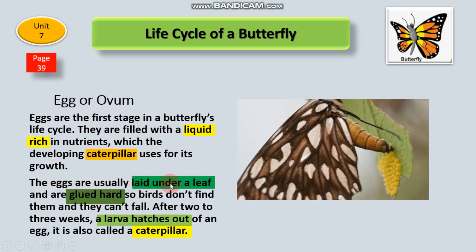Eggs are usually laid under a leaf so birds and other predators don't find them and they can't fall. After two to three weeks, a larva hatches out of an egg — it is also called a caterpillar.